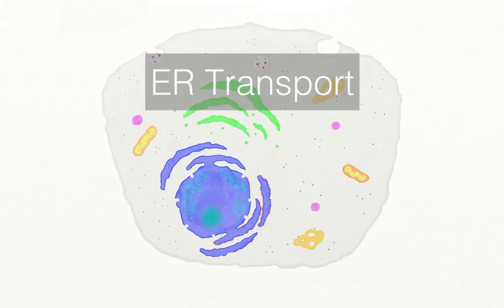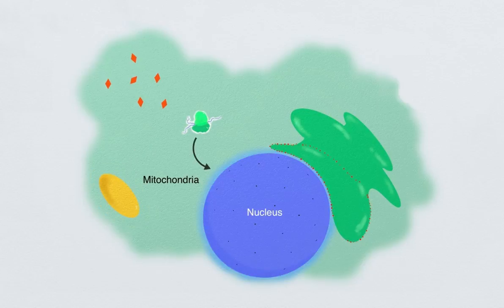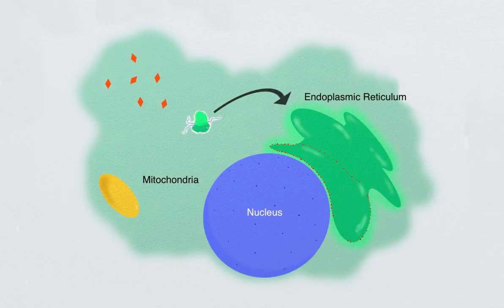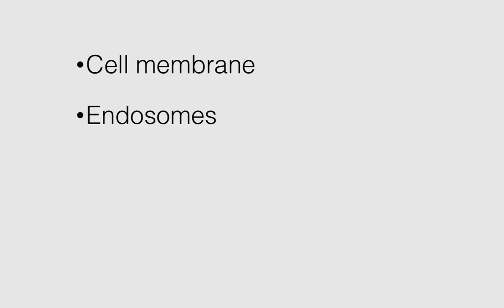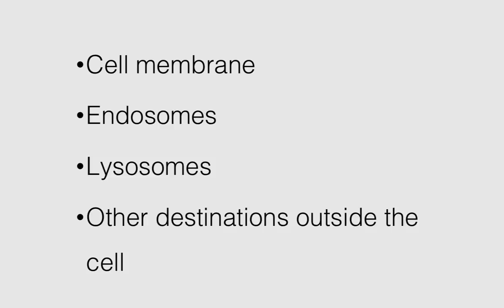If you've seen other Cell Clips videos, you know that proteins synthesized in the cytoplasm either remain there or get transported to the mitochondria, the nucleus, or the ER. However, there are other locations within the cell, such as the cell membrane, endosomes, and lysosomes, as well as destinations outside of the cell where proteins need to be transported.